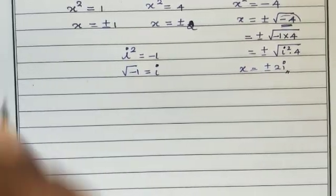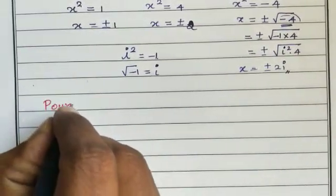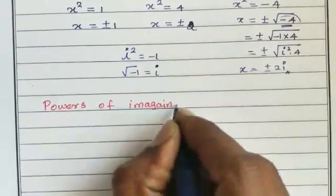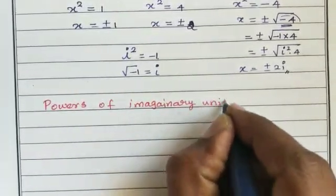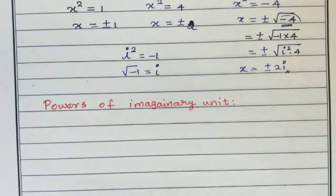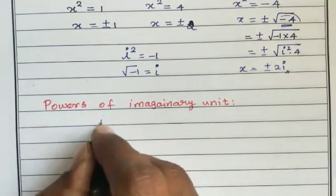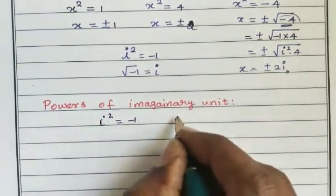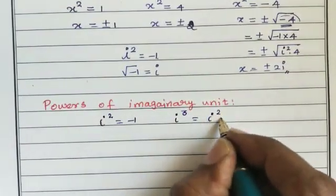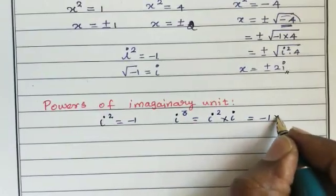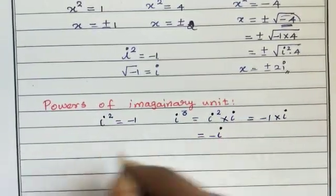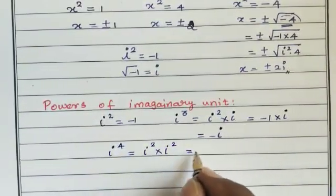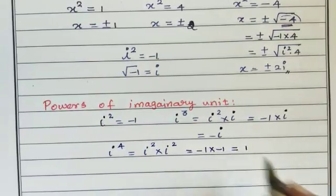Next topic: powers of the imaginary unit. i² = -1. i³ = i² × i = -1 × i = -i. i⁴ = i² × i² = (-1)×(-1) = +1.